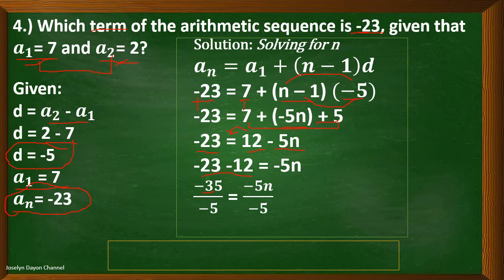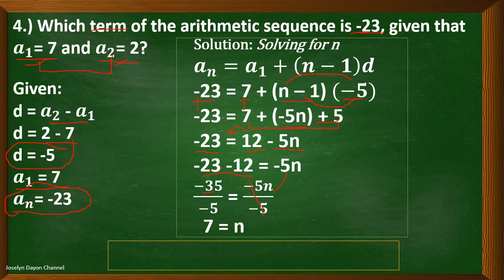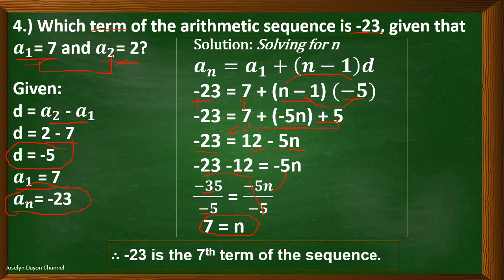So we have negative 35 equals negative 5n. Dividing both sides by negative 5: negative 5n divided by negative 5 equals n, and negative 35 divided by negative 5 equals 7. So negative 23 is the seventh term of the sequence.